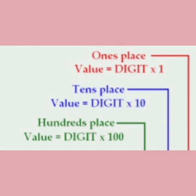For example, the digit in the 1's place is multiplied by 1, the digit in the 10's place is multiplied by 10, and the digit in the 100's place is multiplied by 100.